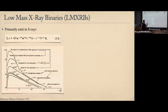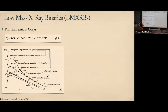These are called X-ray binaries because if you estimate the temperature in the accretion disk itself, you get temperatures of a million, 10 million Kelvin, or even hotter. Thinking in terms of blackbody emission, that puts the emission in the X-ray part of the spectrum, so these systems emit most of their radiation in X-rays.